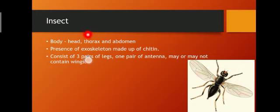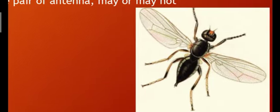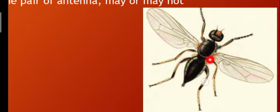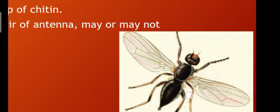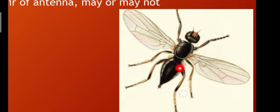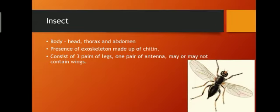Coming to the class Insecta. In insects, the body is divided into three regions — head, thorax, and abdomen. If you can see the organism, the body is covered by an exoskeleton made up of chitin. They have three pairs of legs present in the thorax region, and they may or may not have wings. These are the characteristics of insects.